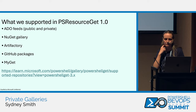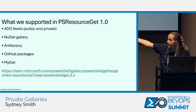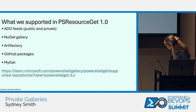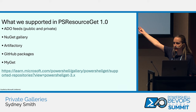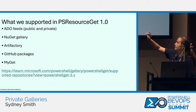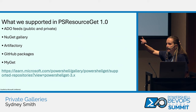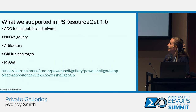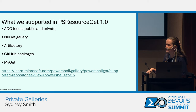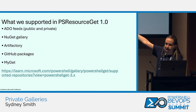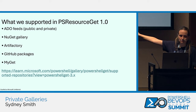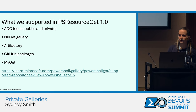What did we support in PSResourceGet 1.0? These are a few of the new feeds we added explicit support for. For ADO feeds — Azure Artifacts feeds — we have public and private support, and both V2 and V3 endpoint support. We added support for NuGet Gallery, though note there's a bug right now where it installs NuGet packages as PowerShell modules. Artifactory — that's JFrog — is supported with V2 and V3. GitHub Packages with public and private support, and MyGet is another supported repository.